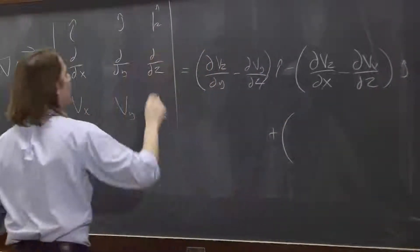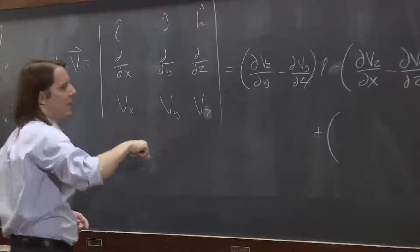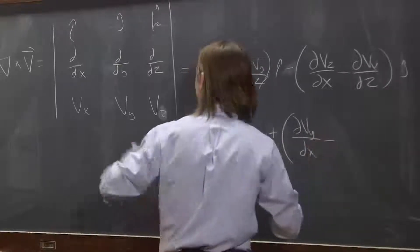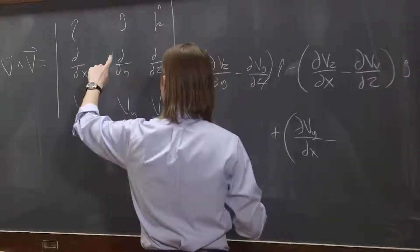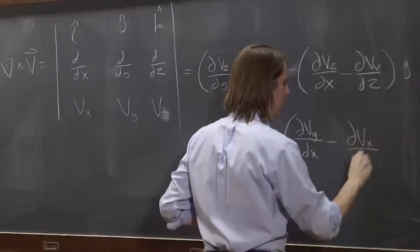And then plus. Now we're doing k hat. So we're plus, minus, plus. And then dv_y/dx minus dv_x/dy. There you go.